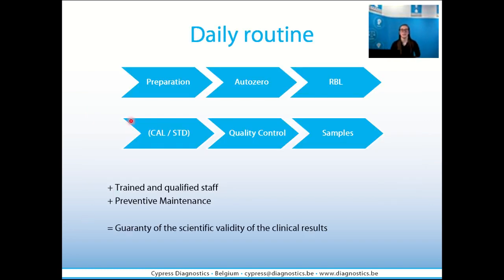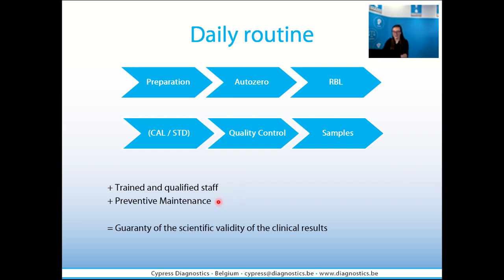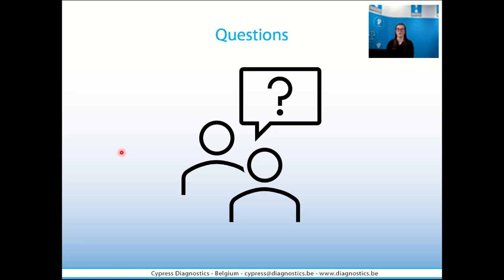Today we have discussed the measurement principle, the auto-zero and what happens when it is out of range, the importance of calibration, why we need to do quality controls, and then we can judge the sample results. If we follow the daily routine in our measurements with trained and qualified staff and also do preventive maintenance, this will guarantee the scientific validity of the clinical results. I hope you enjoyed it and found it very useful. I wish you a very nice day. Bye, thank you.